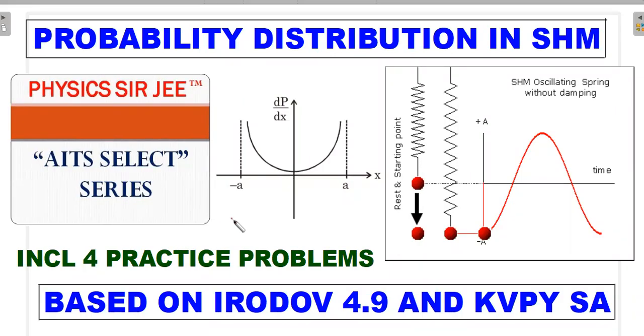Hey, you guys, welcome back to the channel Physics RG. Here we are in AITS Select Series, and I've brought forward to you a problem that troubles students a bit. It's based on IIRodO 4.9 and also has appeared in a different form in a previous KVPY examination. The reason for picking it up from an AITS paper instead of directly solving these problems is this AITS question, which is a slightly modified version, offers a bit more to understand.